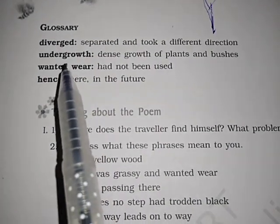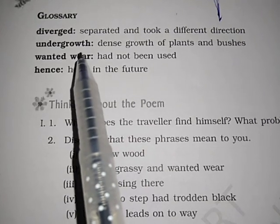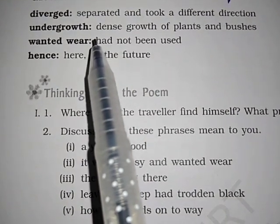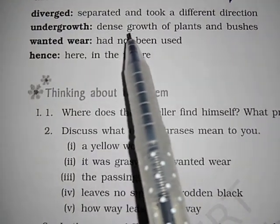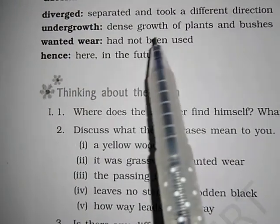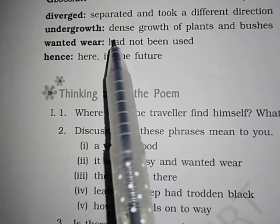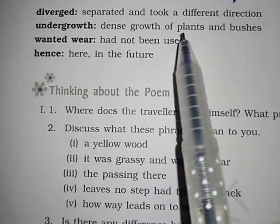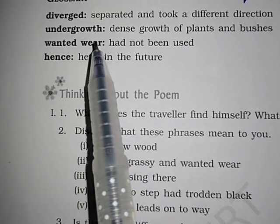Undergrowth. Undergrowth means dense growth of plants and bushes — a wild range of plants and bushes.